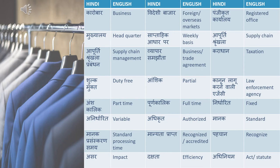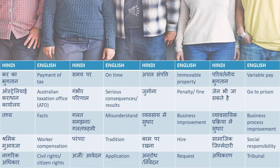Adhiniyam means act or a statute. The next word is kar ka bhugtan — payment of tax. Samayi par means on time. Sometimes dialogues say 'aapko apne kar ka bhugtan samayi par karna chahiye' — you should do payment of your tax on time.